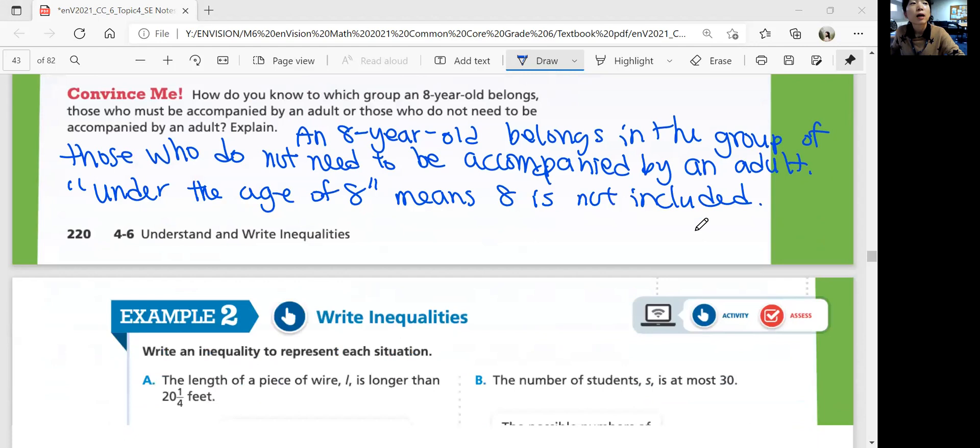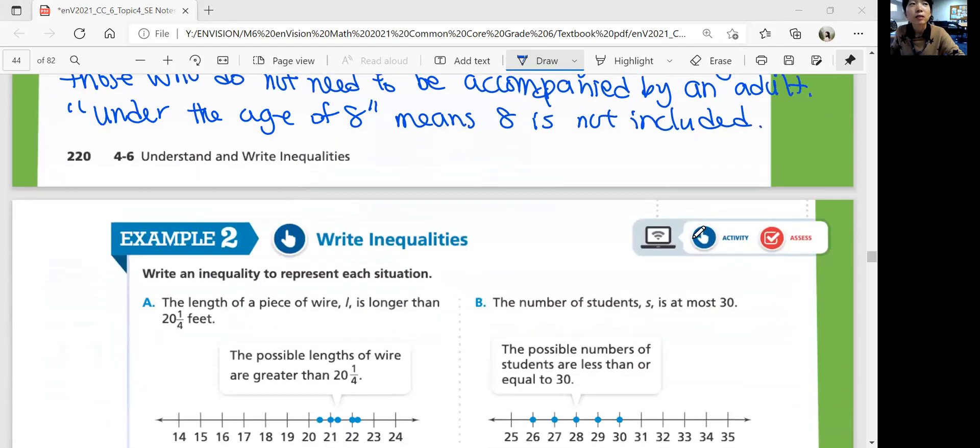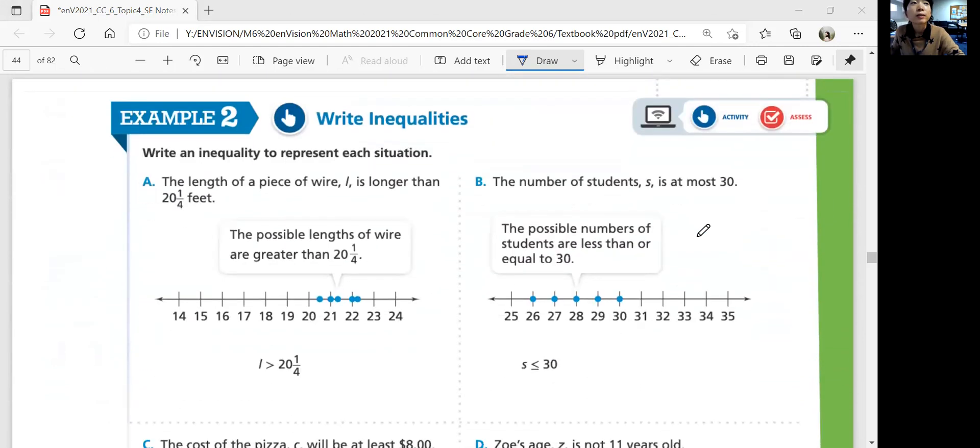Let's look at the next example. Write inequalities. Write an inequality to represent a situation. Part A. The length of a piece of wire L is longer than 20 and one-fourth feet. It's longer means it's greater than. Okay? And it's not including 20 and one-fourth feet because it's longer. It has to be longer. 20 and one-fourth is not longer than 20 and one-fourth. It's equal to. Right?